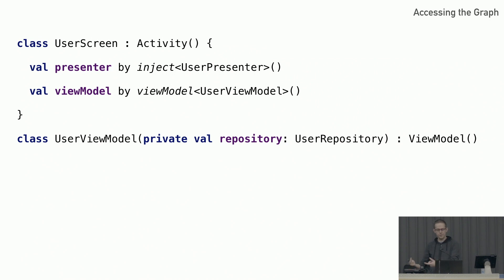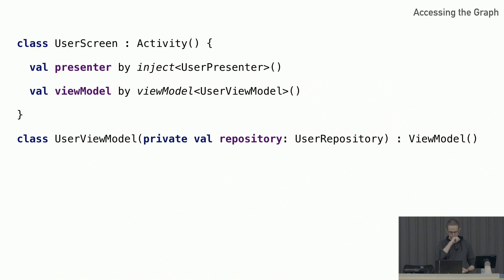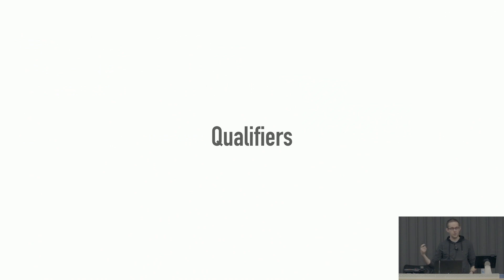If you want something other than a view model, there's the inject delegate for any other class. Instead of resolving eagerly, it pulls from the graph whenever you need it — shorthand for doing by lazy with a get(). This can be used with ComponentCallbacks for Android classes, or with KoinComponent, or by directly accessing GlobalContext.